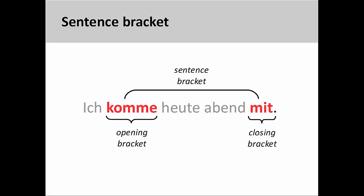This sentence illustrates the concept of the sentence bracket. The opening bracket, as we see here, is a verb, and the closing bracket is part of the verb or a verb form. You will see this structure employed many times in German sentences, so it is important to become very familiar with it.